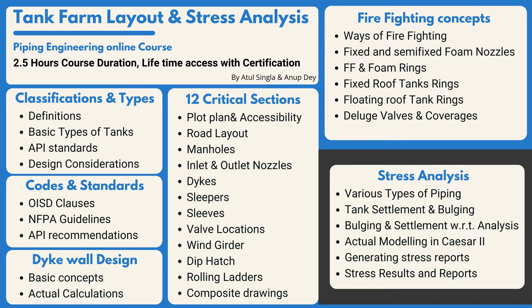First of all, we will cover classification and types — basic definitions, basic types of tanks, and the various API standards with respect to design, construction, and inspection. Then we will look at various design considerations, as well as critical clauses from OASD, NFPA, and API recommendations. This way we can finalize the basic things and implement them in live projects or whenever we start working on tank farm layout.